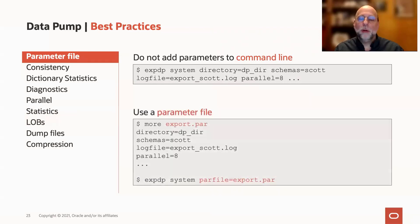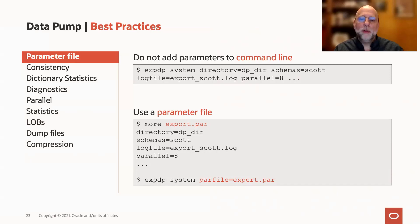If instead you put your parameters in a parameter file, or what we call a par file, then it's much easier to read, much more organized, and you also don't have to deal with the quoting and escape characters that might be particular to one operating system or another, especially when you have special characters and things like the query parameter.